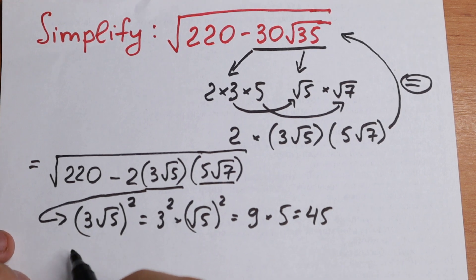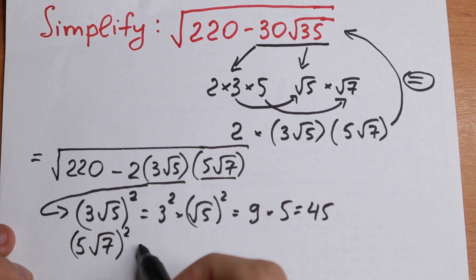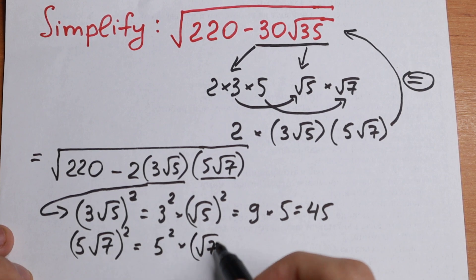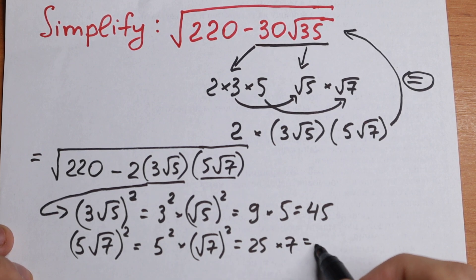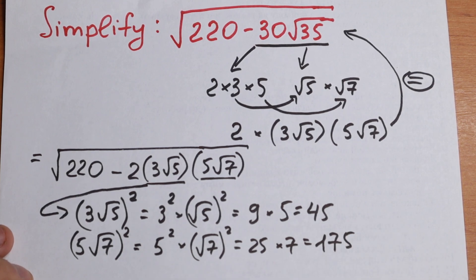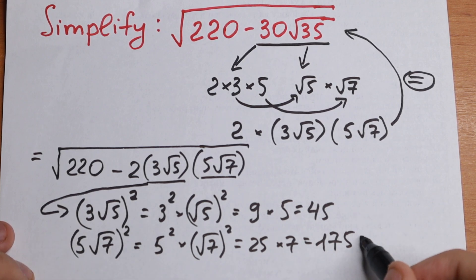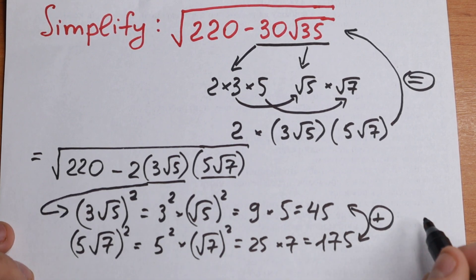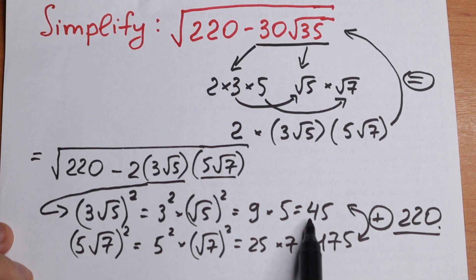Now let's do the same logic with the second number. If I raise 5√7 to the second power, I will have 5 squared times (√7)², which equals 25 times 7, giving us 175. And here is a really interesting moment — this is the first number (45) and this is the second number (175). If we add both numbers, we get 220.